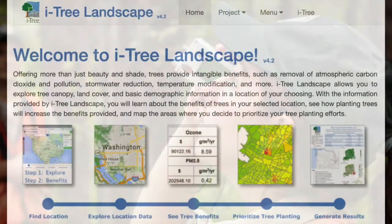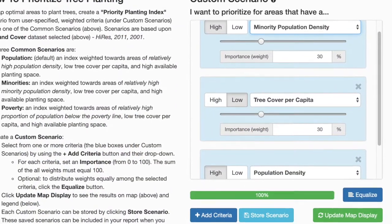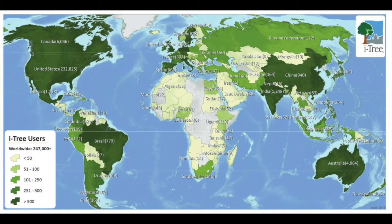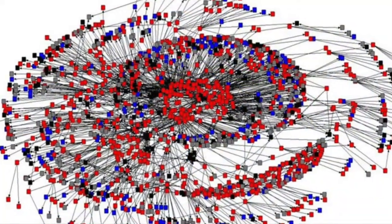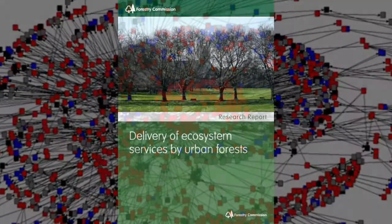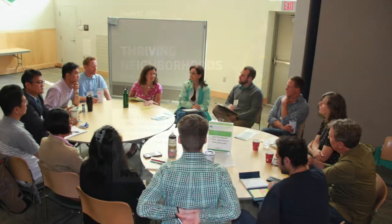Over the past decade, the I-Tree usage and capabilities have increased tremendously. As of mid-2020, there have been more than 410,000 users of I-Tree tools in over 130 countries around the globe. A non-exhaustive literature search reveals over 900 articles that either use I-Tree, develop methods for I-Tree, or make reference to I-Tree. This is an outstanding achievement for the I-Tree development team.